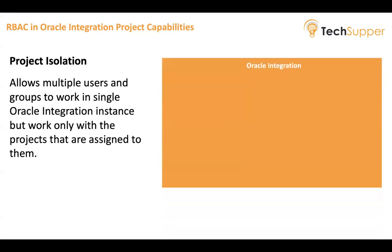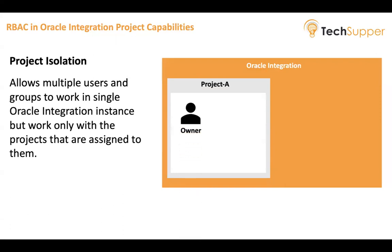Here is how it works. You have a single Oracle Integration 3 instance. In that instance, you create a project, and that project can be distributed among multiple groups or users depending on their roles and responsibilities. For Project A, the owner of the project can do everything — they can create any resource such as connections, integrations, lookups, create a deployment, deploy, and also monitor.